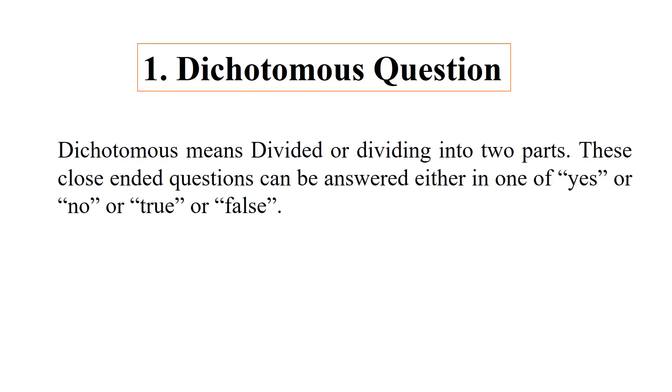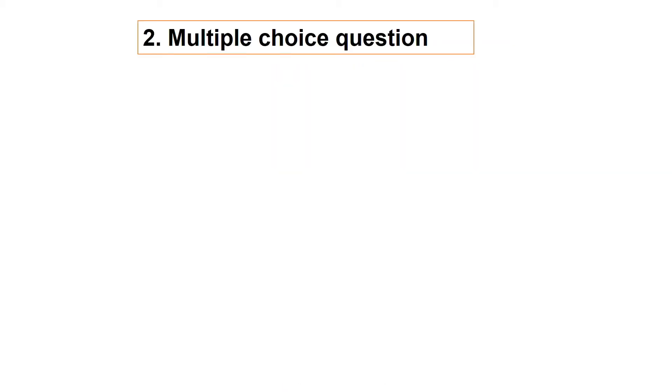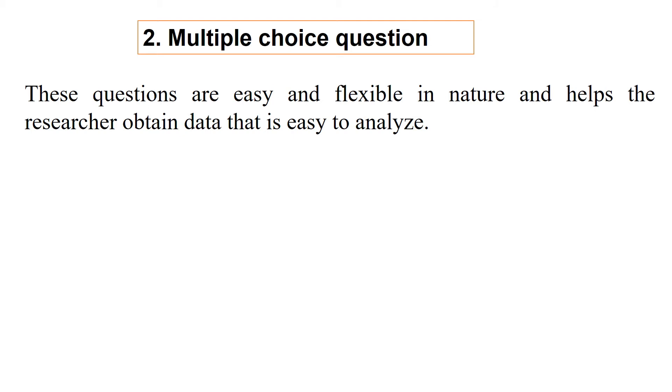Dichotomous means divided or dividing into two parts. These close-ended questions can be answered either in one of yes or no or true or false. For example, do you like coffee? The answer can be yes or no. These questions are easy and flexible in nature, and help the researcher obtain data that is easy to analyze.